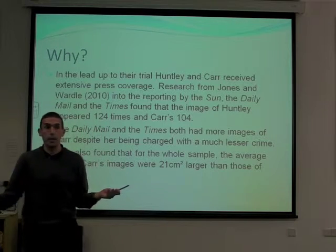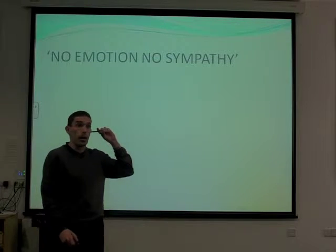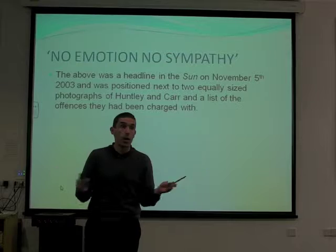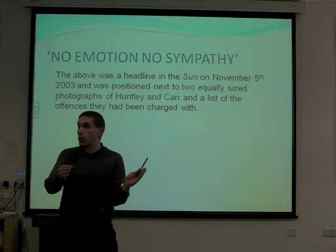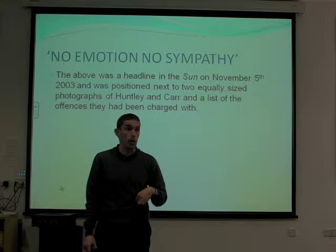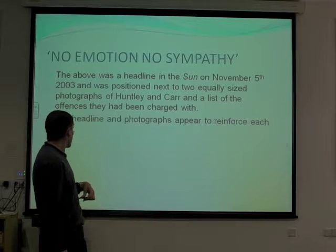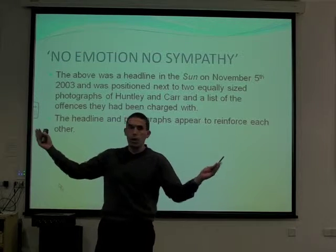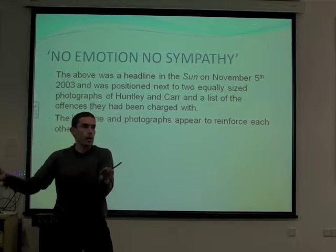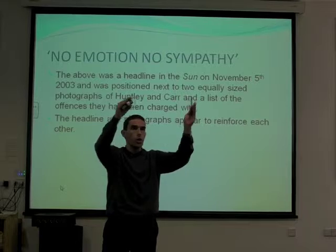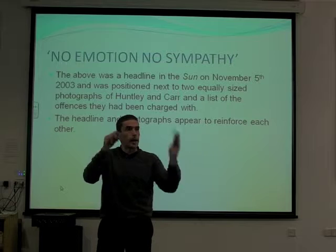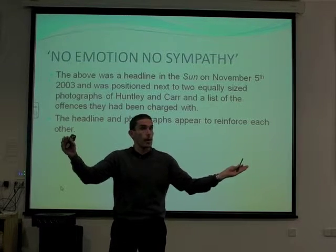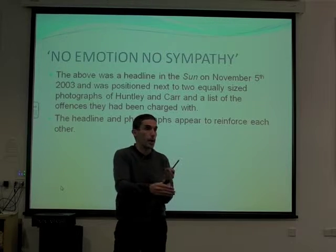This is an interesting look at how the press represent crime. This headline was in the Sun on November 5th, 2003, and was positioned next to two equally sized photographs of the accused — no emotion, no sympathy — and then a list of the charges the two people were accused of. The headline and photographs reinforce each other. Because you see the headline, you see the photographs — if you ask yourself who's got no emotion, who's got no sympathy, it has to be Maxine Carr and Ian Huntley. You are then inclined to believe that both of these people have no emotion and no sympathy, fitting the monster caricature that newspapers use to explain these tragic events.